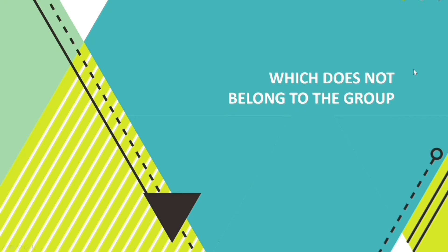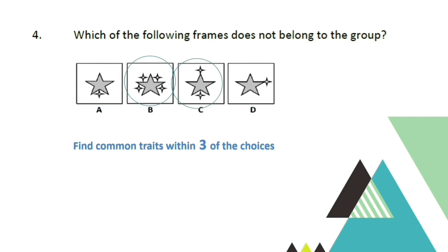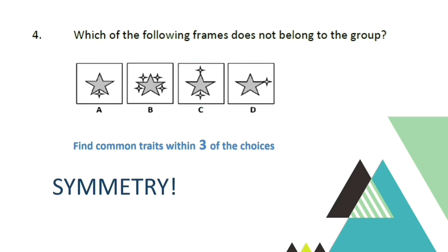Which of the following frames does not belong to the group? In these kinds of problems, you have to find similarities in three of the choices. All choices have five-pointed stars and four-pointed stars. Two choices have one four-pointed star and two have an even number of four-pointed stars. However, what is similar between three of the four choices is the symmetry of the figures — the first three choices are symmetric laterally. The figure in letter D is asymmetric, so letter D is the answer.